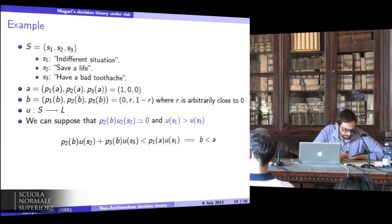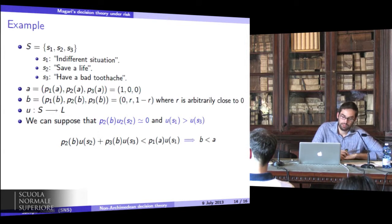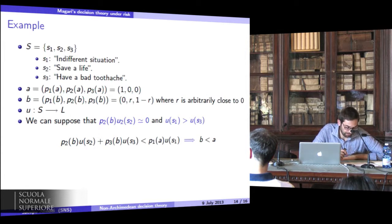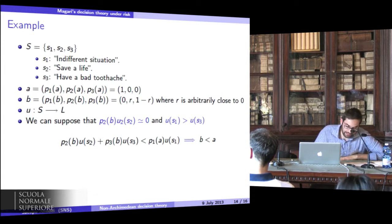Now, for Roberto Magari, independent of the value of p_2(B), a person in this situation must choose action B, because at stake there are inestimable values, that is, the life of a person.